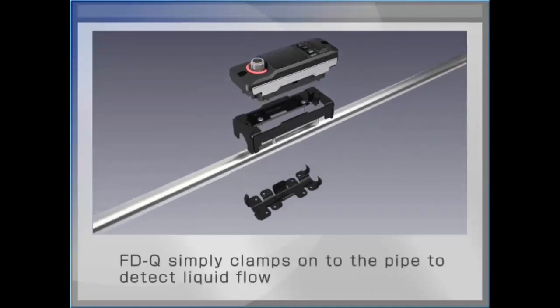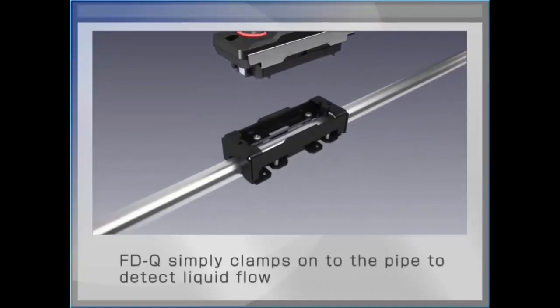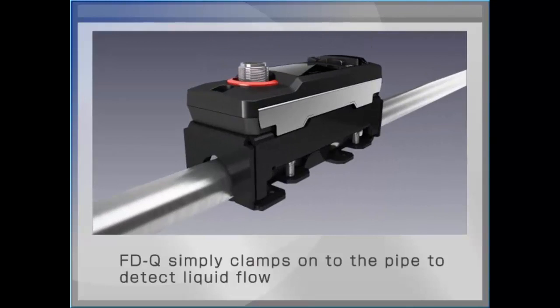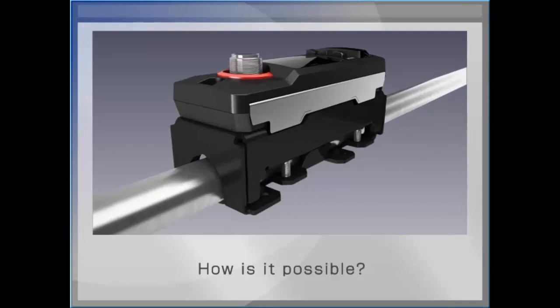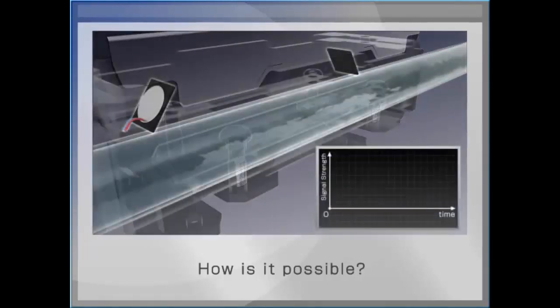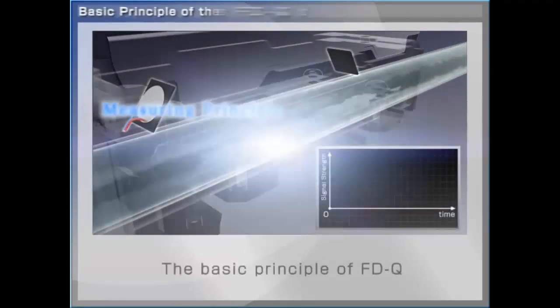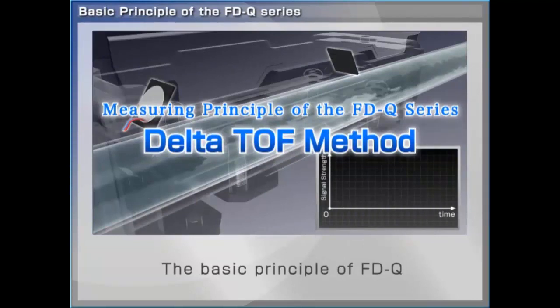The FDQ series of flow sensors simply clamp onto a pipe and detect all sorts of liquid flow. How is it possible for the FDQ to detect the amount of flow from outside of the pipe? The FDQ utilizes the Delta TOF method.